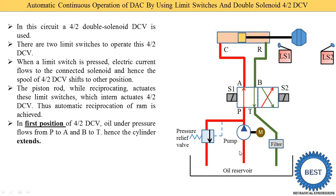In the first position, oil under pressure flows from P to A and B to T, hence the cylinder extends. Oil from the pump enters port P, which is connected to port A, and this oil is supplied to the cap end side. The oil applies force on the piston and the piston starts to move left to right — this is called extension. At the same time, oil on the rod side flows from the rod port to port B, and from port B to port T.